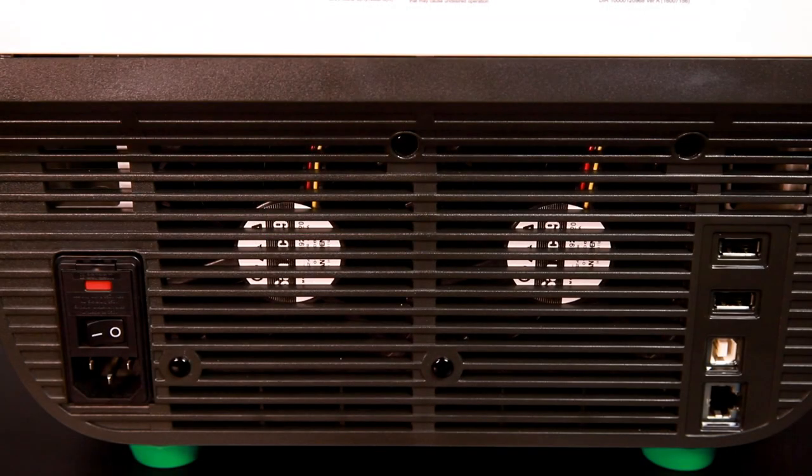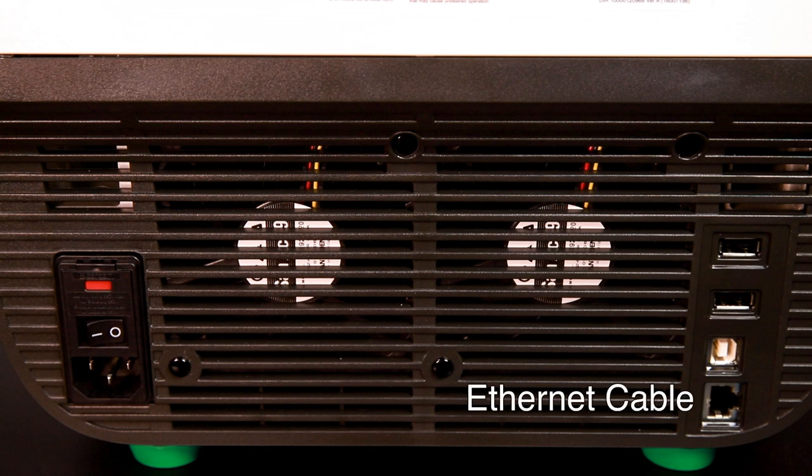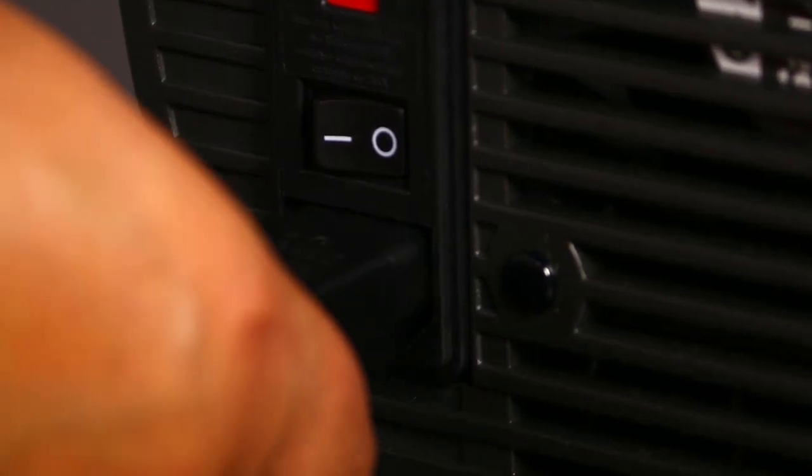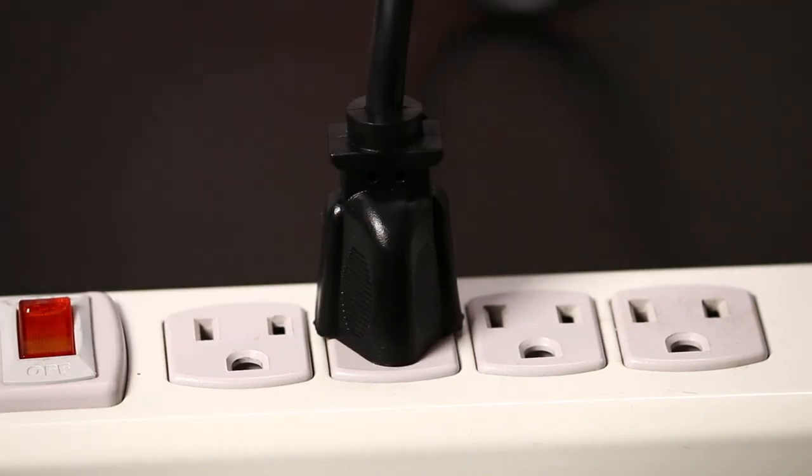The back of the instrument has plugs for the power cable, USB cable, Ethernet cable, and optional Wi-Fi adapter. The power switch is located above the plug for the power cable. Plug the power cable into the back of the instrument. Plug the other end into an appropriate outlet.